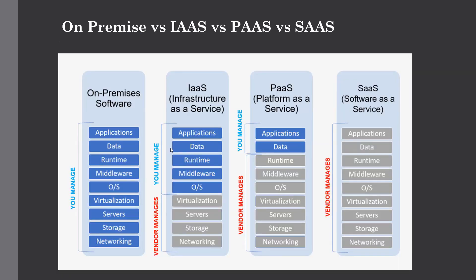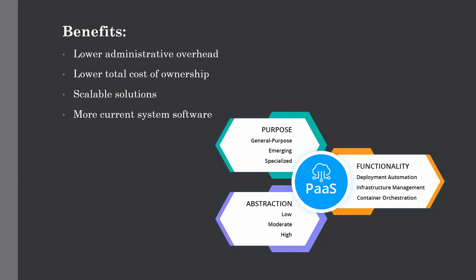This figure shows how PaaS differs from other service models such as IaaS, SaaS, and on-premise software. In PaaS, you have to manage applications and data, and all other things are managed by the cloud vendor — such as runtime, middleware, OS, virtualization, server, storage, and networking. You have full control only over the applications and the data.